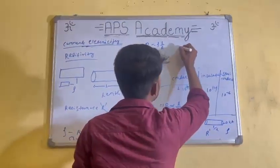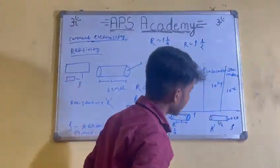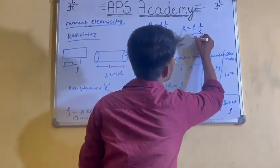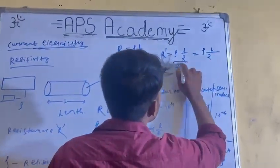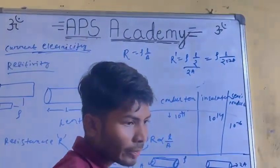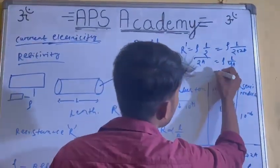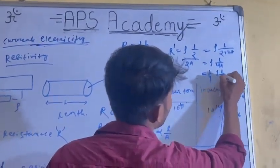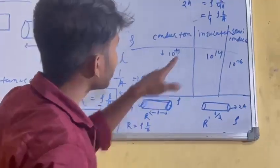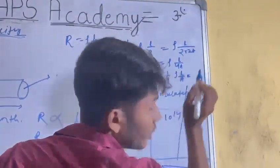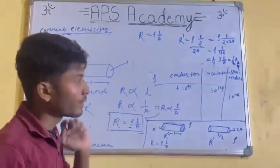We call it Rho L by 2, Rho L by 2. This is the value of Rho L by 2. You can do this on the value of Rho L by 2. The result is L × 4, giving R by 4.